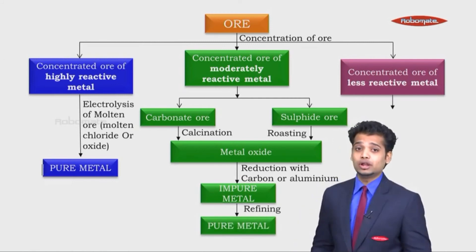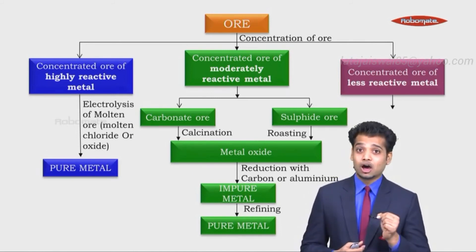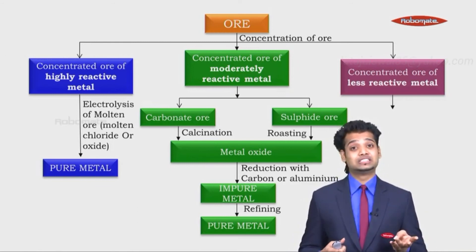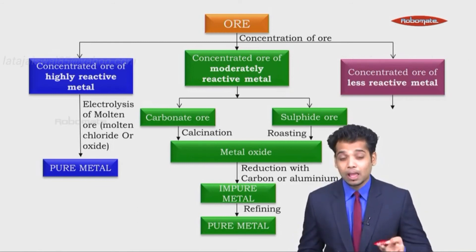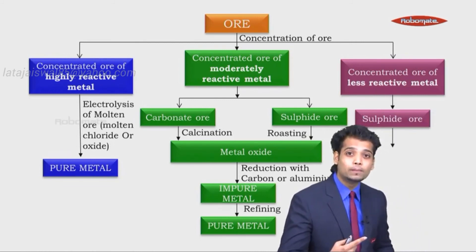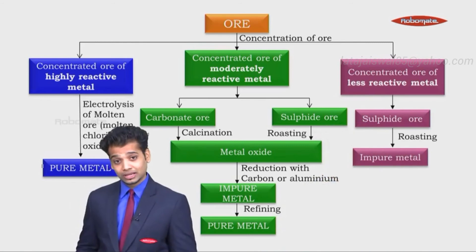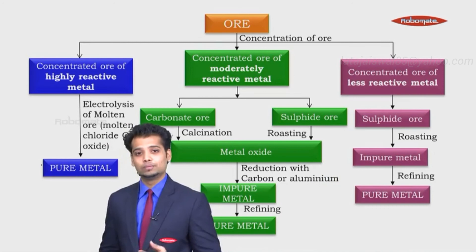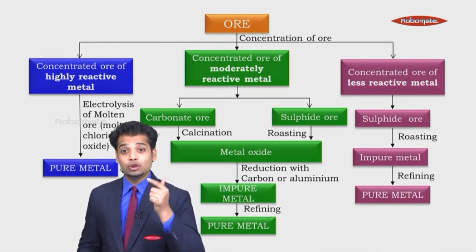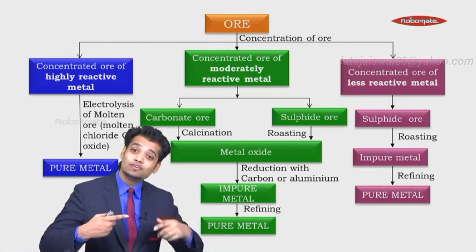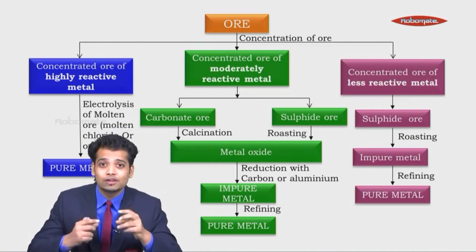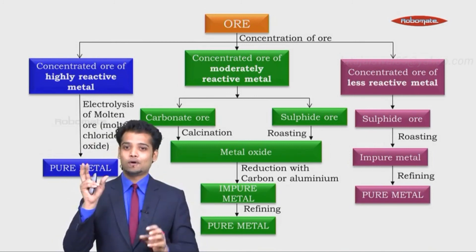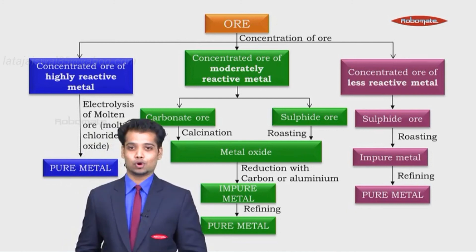For concentrated ore of a less reactive metal — like copper, mercury, silver, and gold — usually silver and gold are in the free state, so you just have to refine them. But copper and mercury would be in sulphide form. You convert it into oxide by roasting. However, because these metals are so less reactive, the metal oxide decomposes during roasting, forming an impure metal, which is then refined into a pure metal.